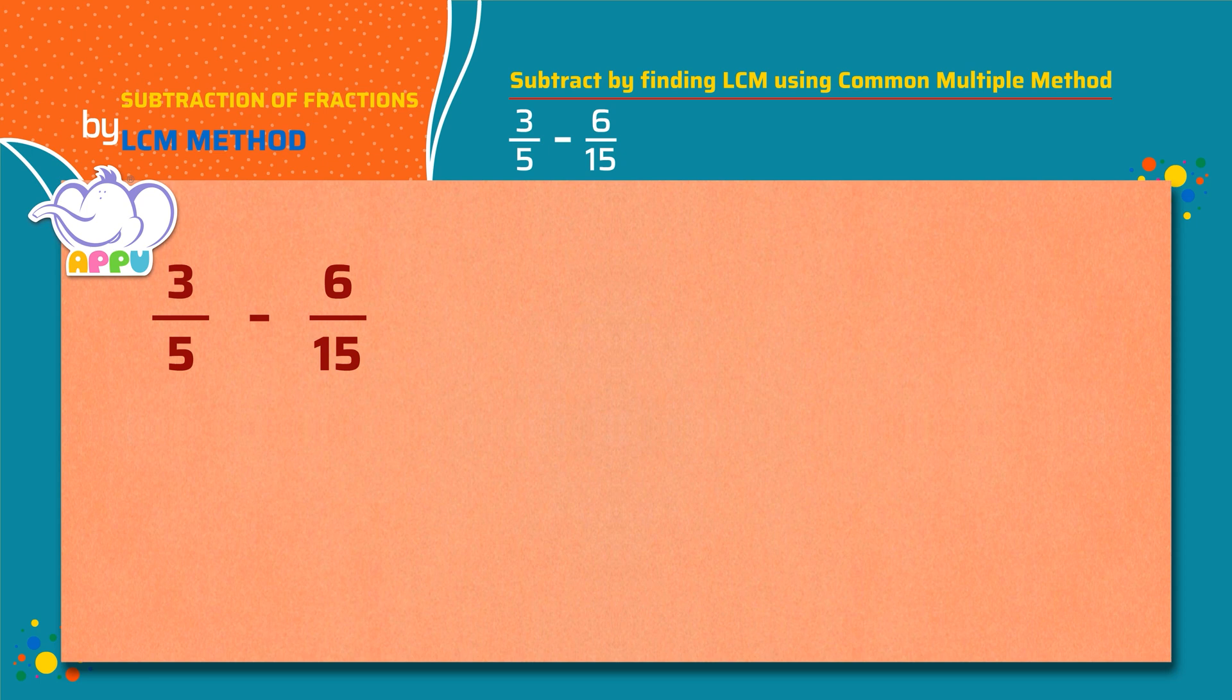We see that the denominators are not the same for both the fractions. Let's make the denominator same by finding common multiple of the denominators 5 and 15.